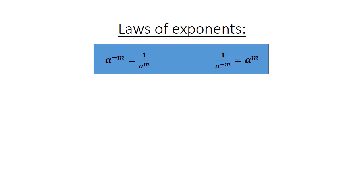A to the negative m equals 1 over a to the positive m — it moves under the line and becomes positive. Conversely, 1 over a to the negative m: it moves up and also becomes positive a to the positive m.